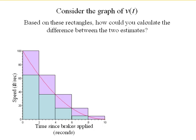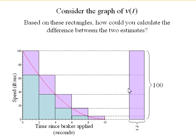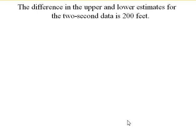Now, if we add up those purple parts, we get how far apart our two estimates were. 100 times 2. Remember, our first estimates when we did two-second time intervals were 200 feet apart.